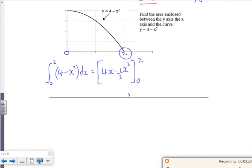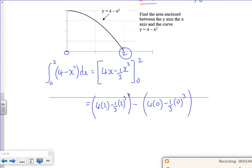I've got 4x minus a third x cubed between 0 and 2. I'm subbing the limits, the upper limit first. So I've got 4 lots of 2 minus a third 2 cubed minus the lower limit, which in this case is 0. It's not always the case that if you put 0 in you get 0 out. So we've got 8 minus 8 over 3, that's 16 over 3 minus nothing from the second.